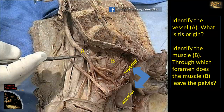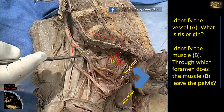Identify the vessel A — what is its origin — and identify the muscle B — through which foramen does the muscle leave the pelvis? To be oriented, this is the sacrum located posteriorly. Here is the common iliac artery dividing into external and internal iliac. The internal iliac artery goes down into the pelvis and provides the main blood supply of the pelvis — so vessel A is the internal iliac artery. Muscle B is located in the posterior aspect of the pelvis, arising from the anterolateral aspect of the sacrum (middle three pieces), forming a bed for the sacral plexus — this is the piriformis muscle. It leaves the pelvis through the greater sciatic notch to reach the gluteal region and attach to the greater trochanter of the femur.